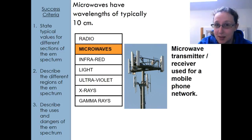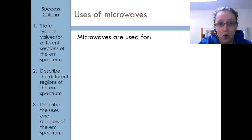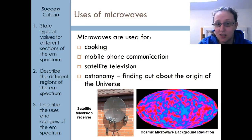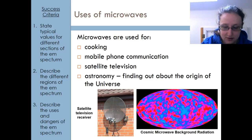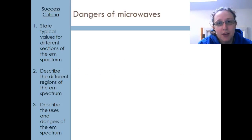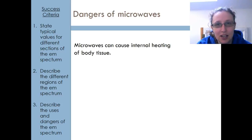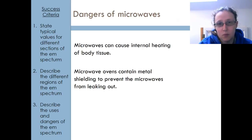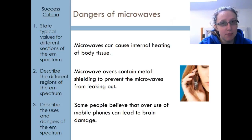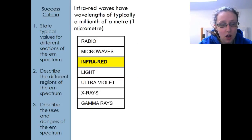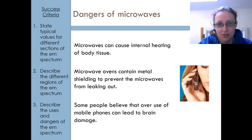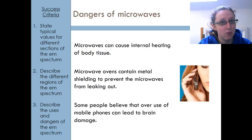Next up are microwaves. They're sort of in the realm of 10 centimeters — that's kind of the middle of the range. They are used for cooking, mobile phone communication, satellite TV, and astronomy. That's a map of the universe of the background microwave radiation, which helps us learn things about the Big Bang. We also need to know about the dangers of microwaves: they can cause internal heating of body tissue — basically, they can cook you. Microwave ovens have metal grids inside that prevent microwaves from leaking out. There are also concerns raised about mobile phones and links to brain cancer, though there is no evidence of that at the moment and there haven't been many long-term studies yet, so the jury is out — we have no conclusive evidence either way.